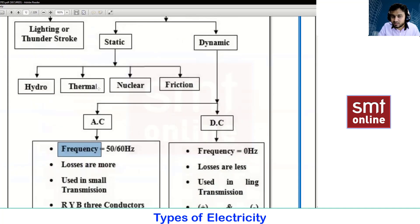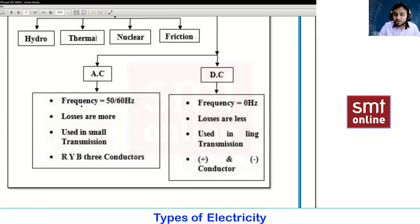This alternating current will have a frequency. What is meant by frequency? Number of cycles per second. Just now we have seen the waveform - the resistive load, inductive load, as well as the capacitive load. The combination of positive cycle and negative cycle gives us one waveform. In India and many Asian countries we have 50 cycles per second.